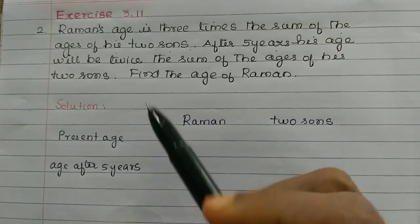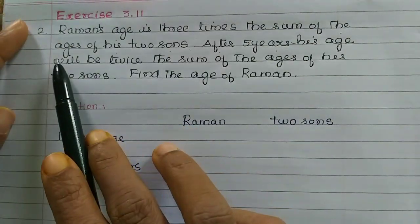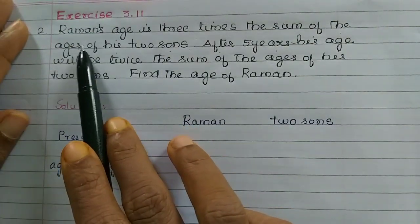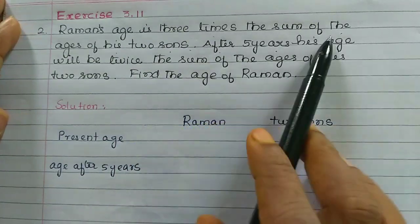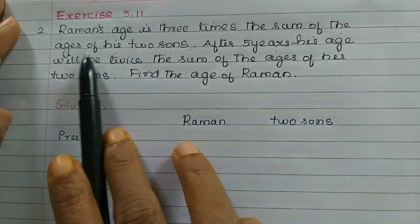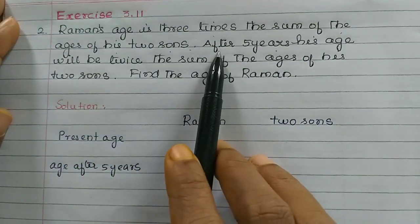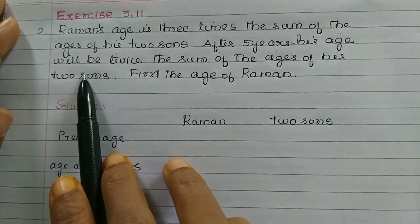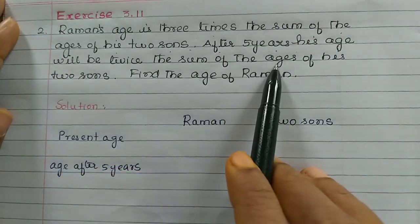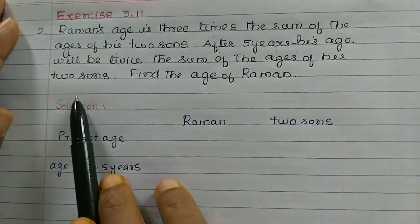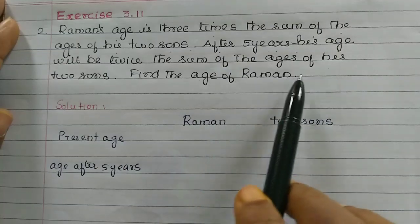Hi students. In this video we will talk about exercise 3.11 in 2nd sum. Raman's age is 3 times the sum of the ages of his 2 sons. After 5 years, his age will be twice the sum of the ages of his 2 sons. Find the age of Raman.